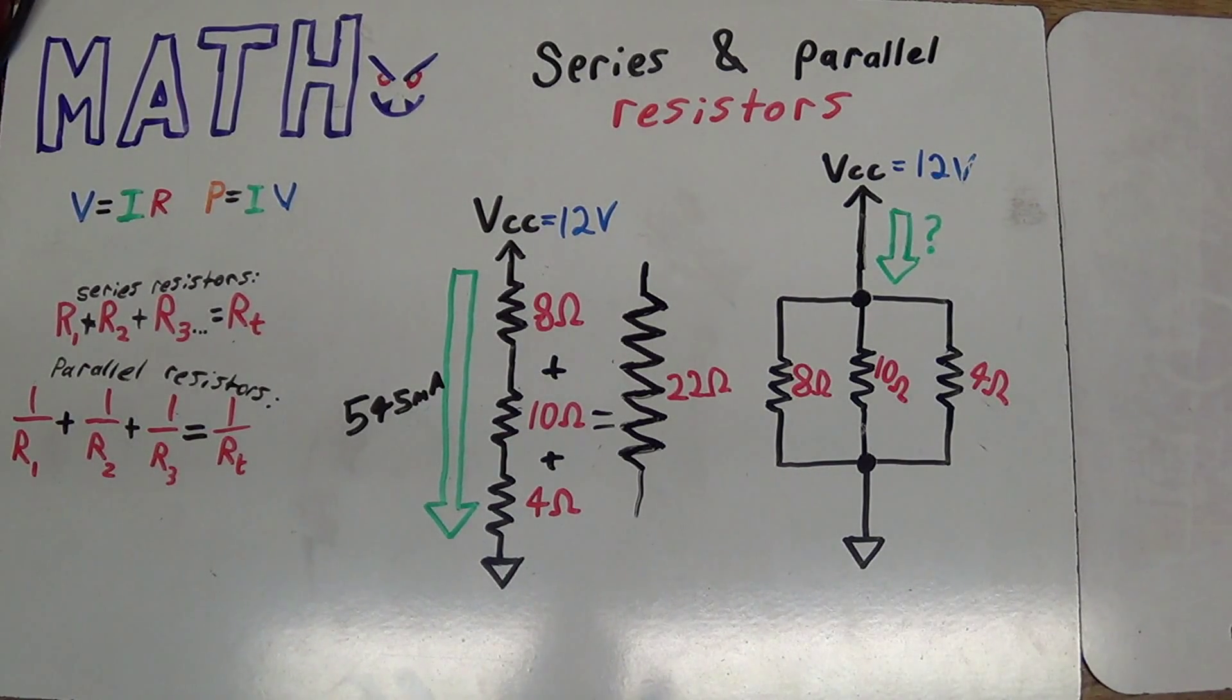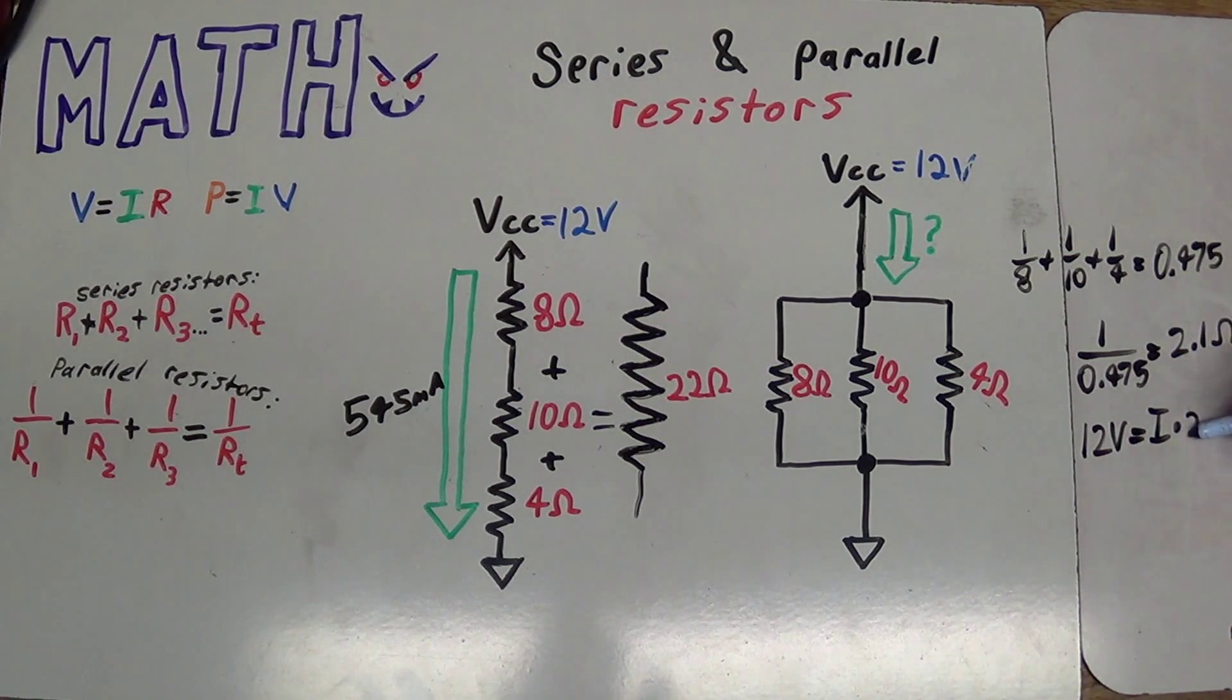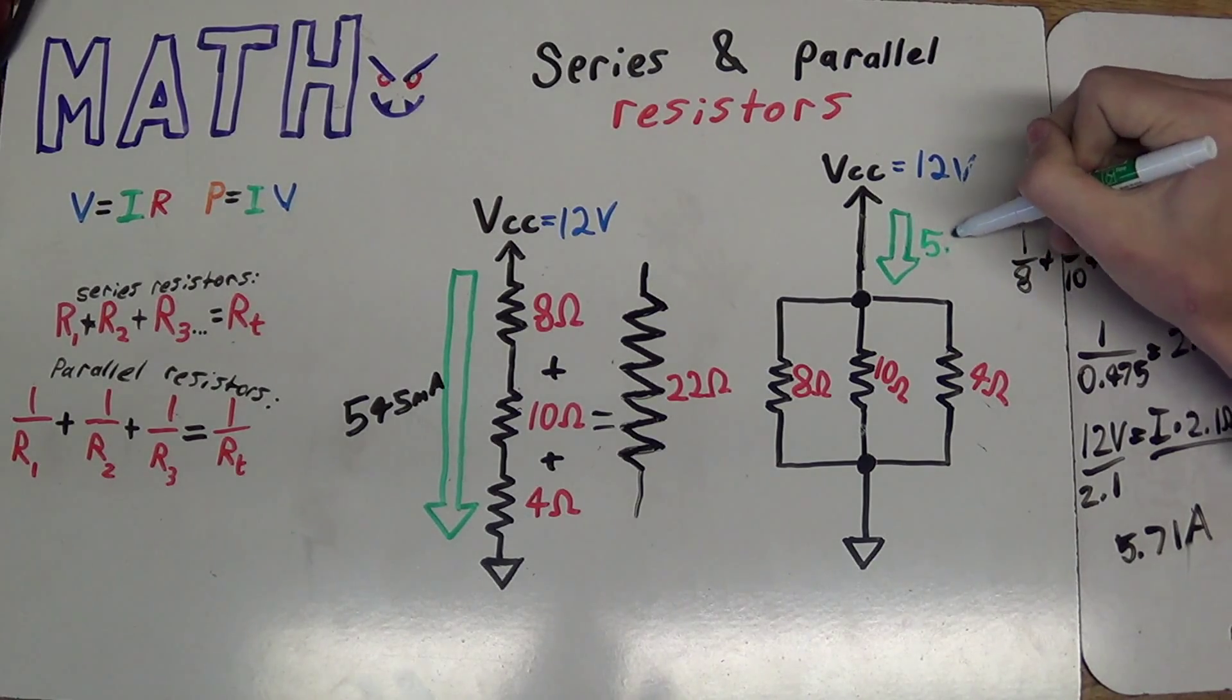Just take 1 divided by the first resistor, which is 8, plus 1 over 10, plus 1 over 4. And you'll get a total of 0.475 after crunching the numbers. Then we just take the inverse of that, and we'll end up with a total resistance of 2.1 ohms. Now there are going to be some rounding errors, because I've just converted everything over to decimals, and kept 2 to 3 significant digits the whole time. If you want more precision, you can use fractions and then convert to a decimal once it gets to your final answer. So now we can just use Ohm's law, just like before, to figure out what the current is going to be.